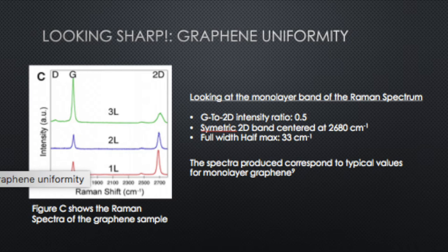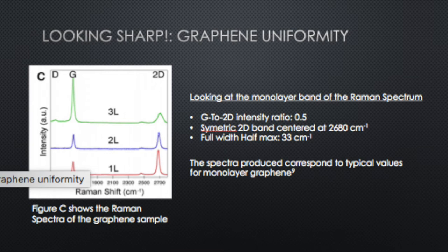Looking at figure C, the Raman spectra of the sample, we examine the G peak and the 2D peak for the monolayer band labeled 1L. The G-to-2D peak intensity ratio is about 0.5, meaning the G peak intensity is about half the 2D peak intensity. The symmetric 2D band is centered at 2680 wavenumbers with a full width at half maximum of 33 inverse centimeters. This data corresponds to Raman spectra from other known monolayer graphene samples, confirming that the CVD-produced graphene is indeed monolayer.